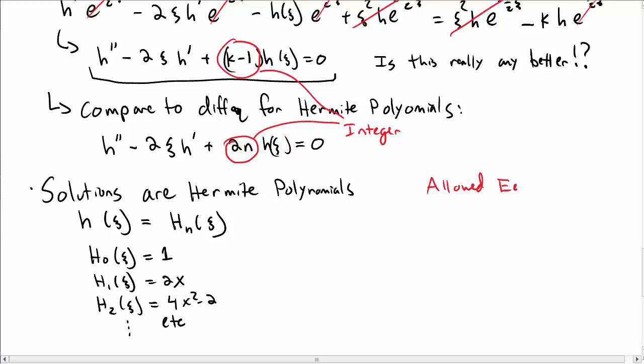So that tells us that the allowed energies for our system are when K - 1 equals 2 times an integer. Well, remember K was our dimensionless energy 2E/(ℏω). So we can rearrange this to find the allowed energies E_n, and those are ℏω(n + ½). So we found the quantized energies.